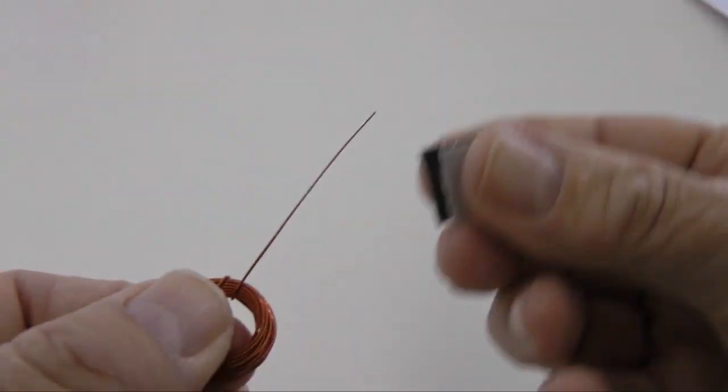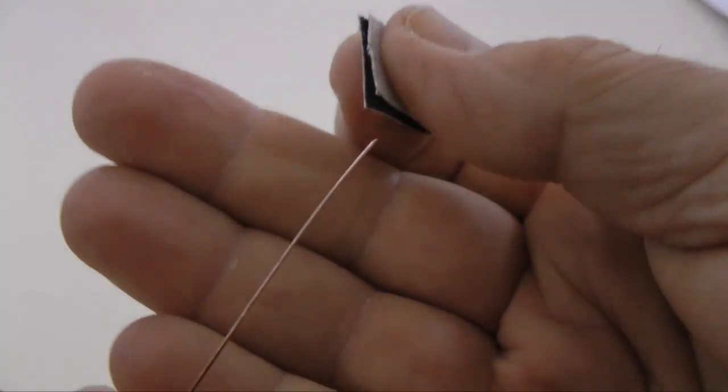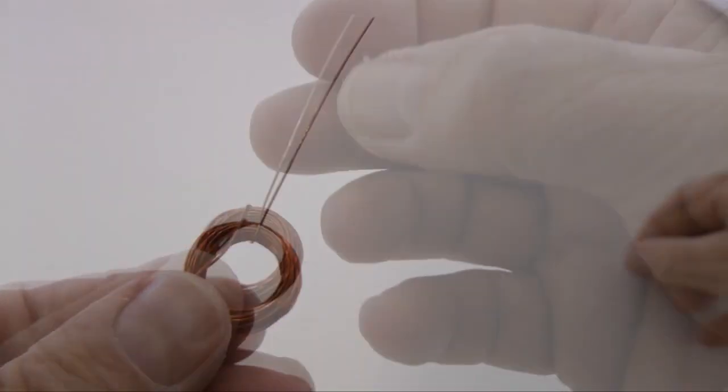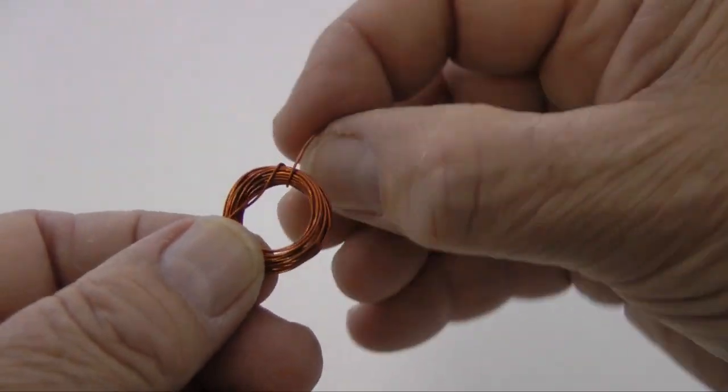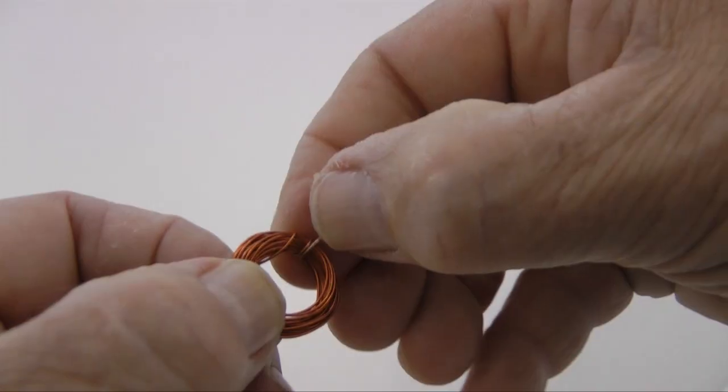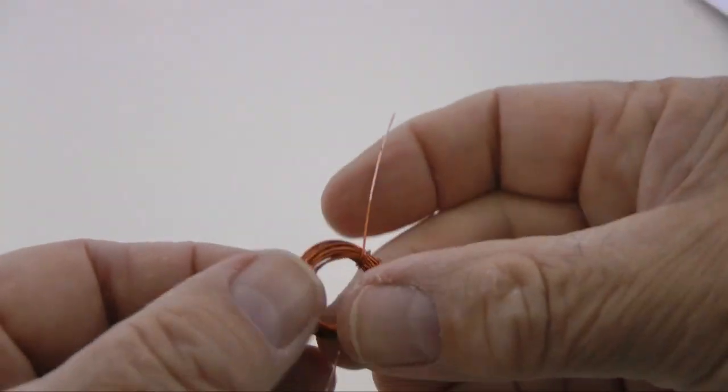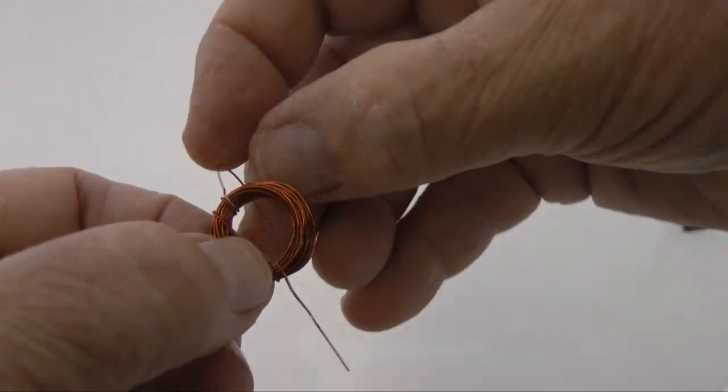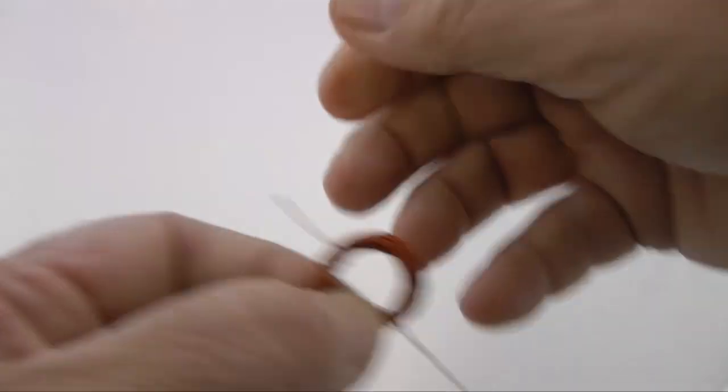The enamel coating is difficult to remove and requires a lot of effort. Sanding may stretch the wire. Just loop the excess back through the coil.